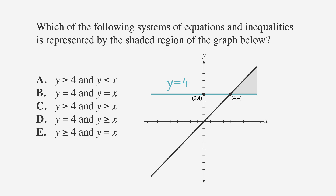This line is y equals 4. The shaded region contains points where y equals 4, but it also contains points where y is greater than 4 — like where y equals 5, where y equals 6, and all other points where y is greater than 4. So we know y must be greater than or equal to 4. Any choice that only says y equals 4 is incorrect, so let's cross off answer choices B and D.